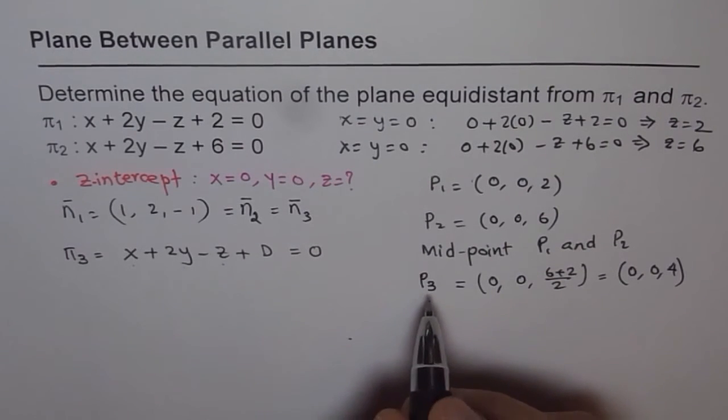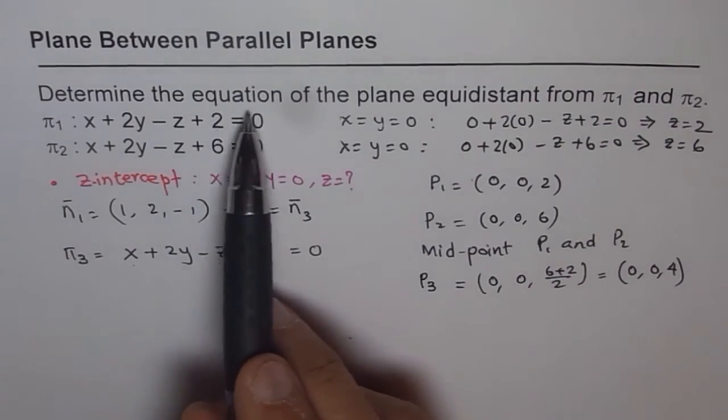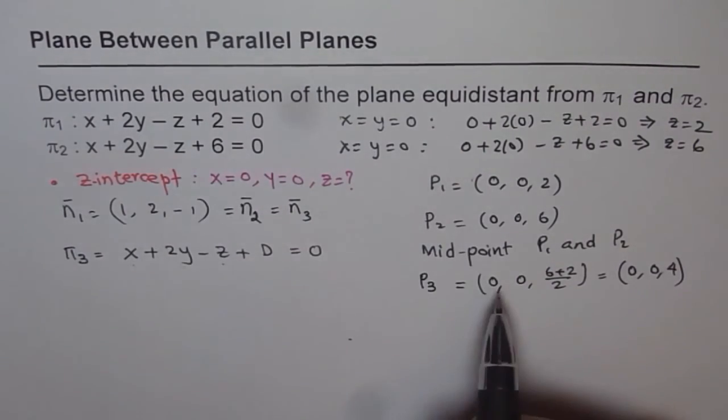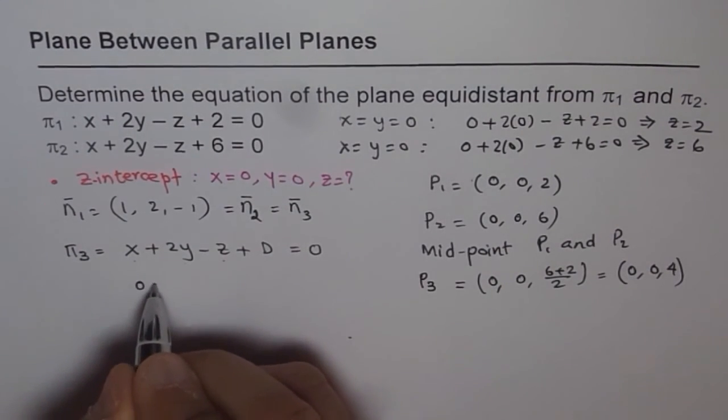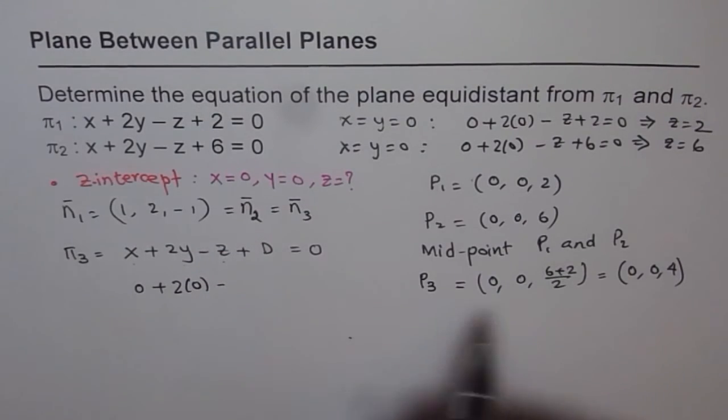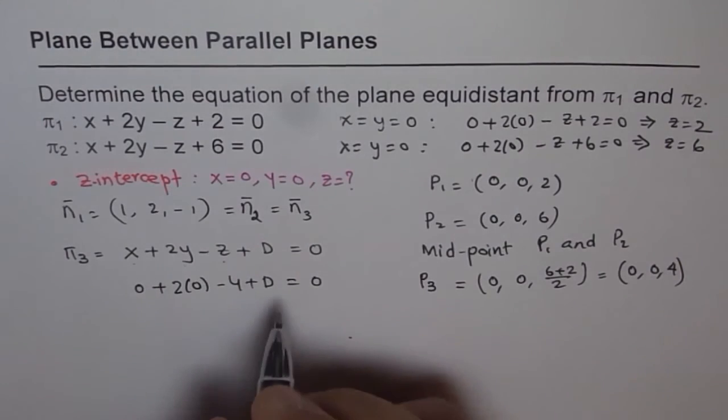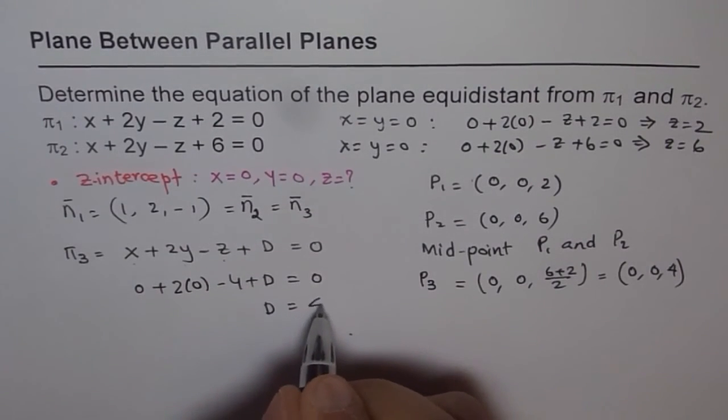Now, since the point P3 should be on our plane which is equidistant from the given planes, we will put this point and find d. So if we substitute 0, 0, and 4 here, we get 0 + 2(0) - 4 + d = 0. And so we get d = 4.